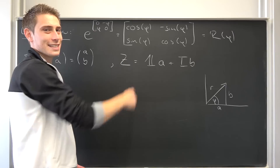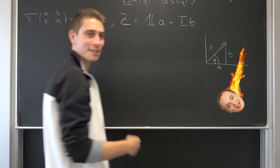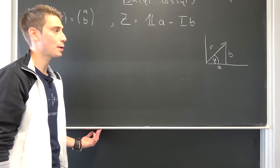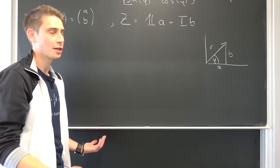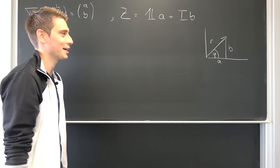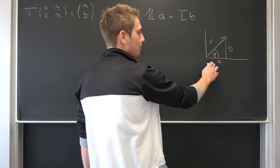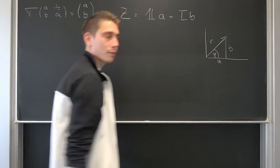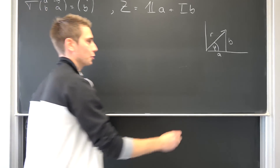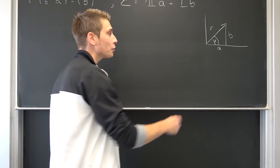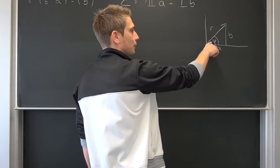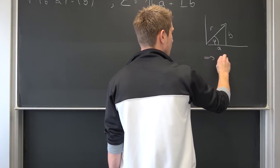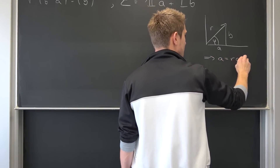There is also a certain angle enclosed between the x-axis and our radius — we are going to call this angle phi. Now we can use cosine and sine: the cosine of phi is nothing other than a over r (adjacent over hypotenuse), meaning if we solve for a, then a equals r times the cosine of phi. We don't want r to equal zero.